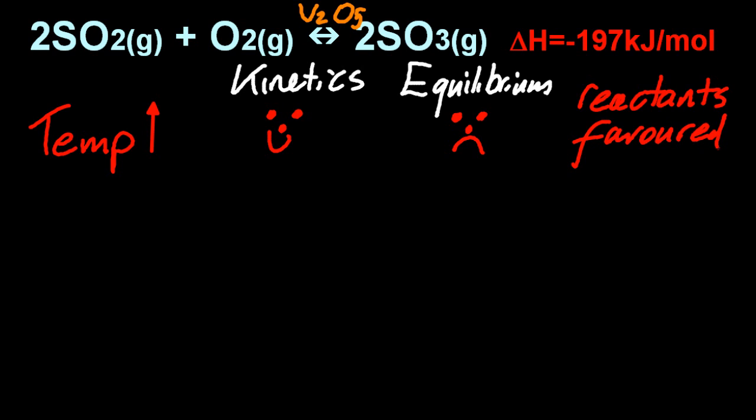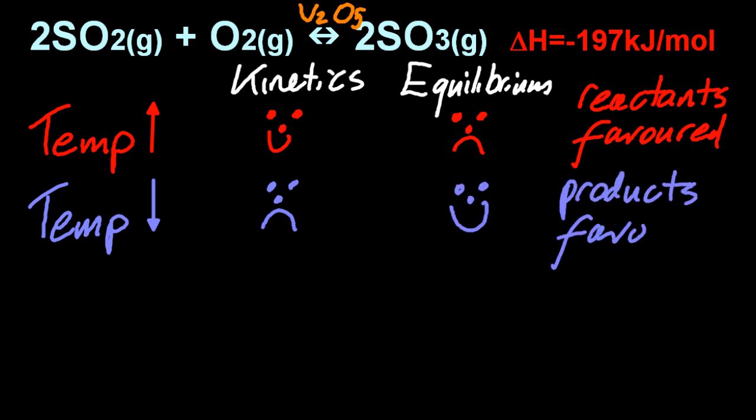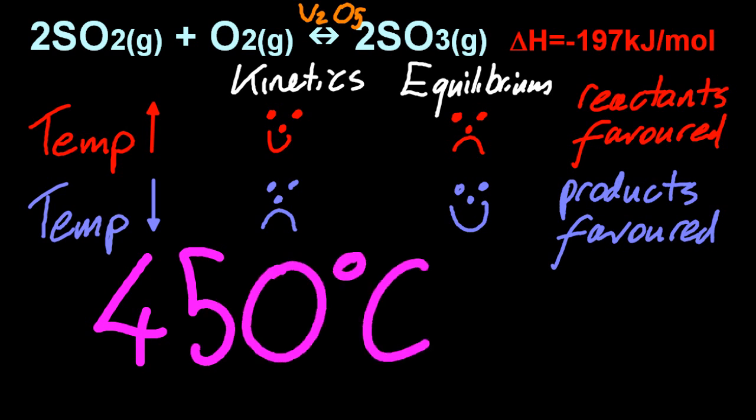If I lower the temperature, that's going to mess up the speed of the reaction, but I am going to make a lot of sulfur trioxide, because the equilibrium is going to shift to the exothermic side, which is the products. You see that delta H is minus? So once again, we're going to need a compromise temperature, a Goldilocks temperature, if you will. And it's the same as the Haber process, 450 degrees C.